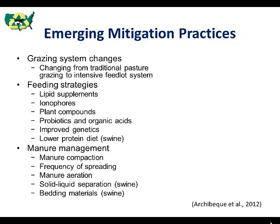Several efforts are underway to identify mitigation practices for animal agriculture production. Arkebeck and others in a 2012 report summarized the current state of mitigation alternatives for beef, dairy, and swine operations. In addition to the practices already discussed, they listed several new and emerging ones where further research is needed before widespread implementation. They looked at changes in grazing systems, feeding strategies and diets, and manure management. The authors felt more research should focus on the mitigation potential of changing from traditional pasture grazing systems to intensive feedlot systems. For feeding strategies, they suggested more research on dietary supplements such as lipids, ionophores, plant compounds, probiotics, and organic acids, as well as improved genetics to help animals use feed more efficiently and reach maturity quicker.